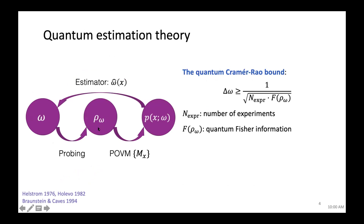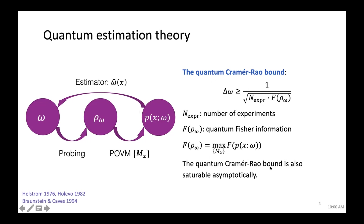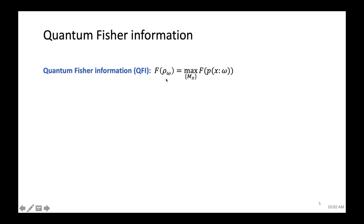In the quantum case, instead of a probability distribution we consider a density matrix ρ(ω). We perform any POVM on ρ(ω), get a probability distribution, and infer ω using classical estimation theory. This gives a quantum Cramér-Rao bound replacing classical Fisher information with the quantum Fisher information (QFI), defined as the maximum classical Fisher information over all possible POVMs. This bound is also asymptotically saturable using the optimal measurement.